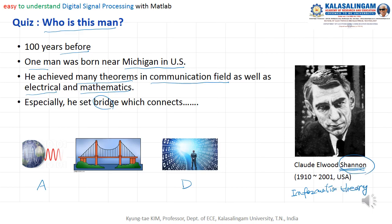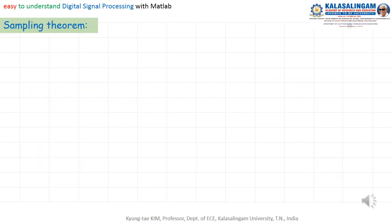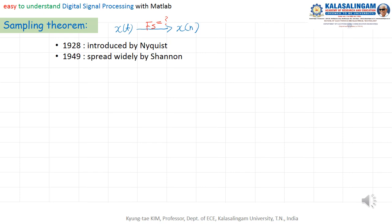Shannon is a very important person in the DSP field. By his theory, we call it the sampling theorem. Sampling means how to convert a continuous time signal to a discrete time signal. In 1928, Nyquist introduced it already, and in 1949 the theory was widely spread.